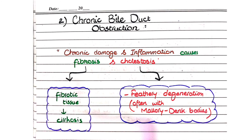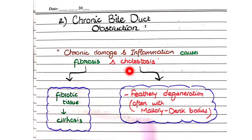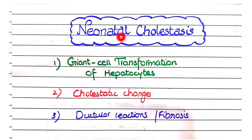Due to the cholestasis caused by obstructed bile ducts, you will see the pathological features of cholestasis. The most striking feature is feathery degeneration, in which hepatocytes become swollen with bile pigment and their cytoplasm appears foamy. Along with feathery degeneration, in cholestasis caused by chronic bile duct obstruction, you also see Mallory-Denk bodies, which we studied in fatty liver disease.